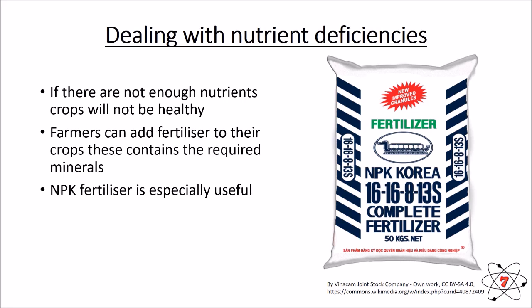NPK fertilizers are the main types of fertilizers that many farmers use. NPK stands for nitrogen, phosphorus, and potassium. In this image we can see an NPK fertilizer labelled 16-16-8-13S. This tells us the ratio of nitrogen to phosphorus to potassium is 16 to 16 to 8, and the 13S indicates sulfur has also been added. These ratios tell us whether the fertilizer is going to be useful for our crops.